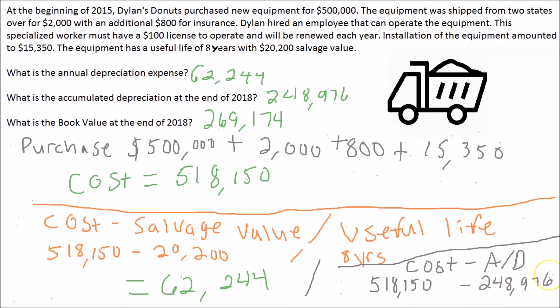To recap: always start with your cost first — whatever gets that asset ready for its intended use goes into the cost. Then apply the formula: cost minus salvage value divided by useful life to get $62,244 annual depreciation expense. Multiply by four years for accumulated depreciation of $248,976, then subtract from cost to get book value.